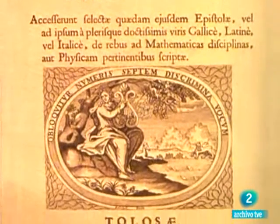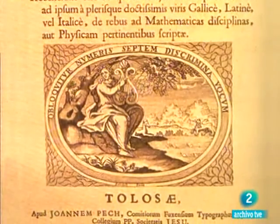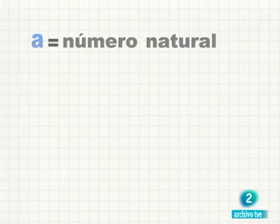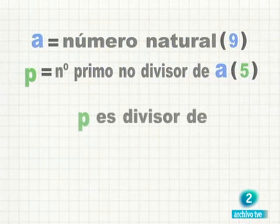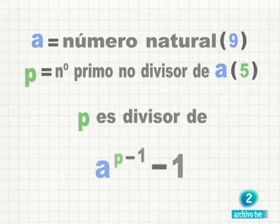Fermat, en una carta enviada a un amigo, le cuenta que había hecho otro descubrimiento sorprendente. Si A es un número natural cualquiera, por ejemplo 9, y P, un número primo que no es divisor de A, por ejemplo 5, siempre se cumple que P, en este caso 5, es divisor exacto de A elevado a P menos 1, menos 1.